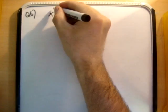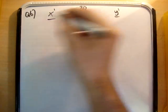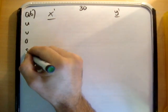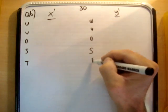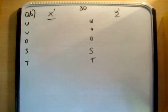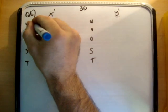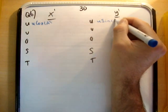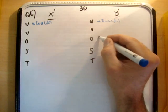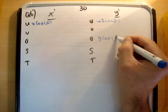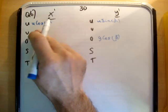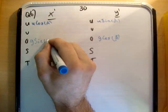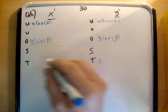So, for the x prime axis, the y prime axis, let's plug in what we know. This is going to be u times the cos of alpha, u sine alpha. This is going to be g times the cos of beta, g times the sine of beta. This is t and this is t.